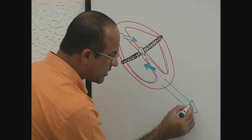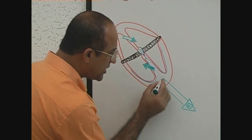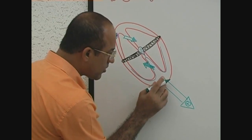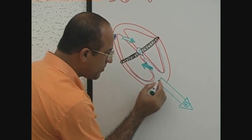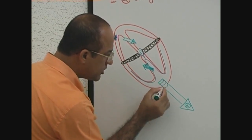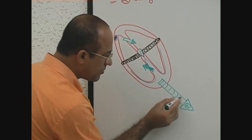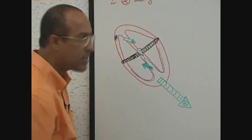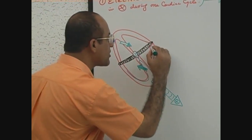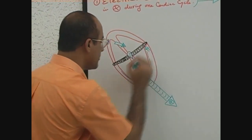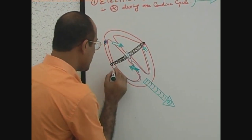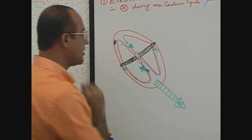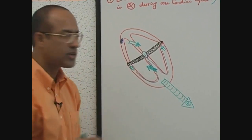This larger vector represents major ventricular depolarization. And in the end, these small vectors represent basal ventricular depolarization.